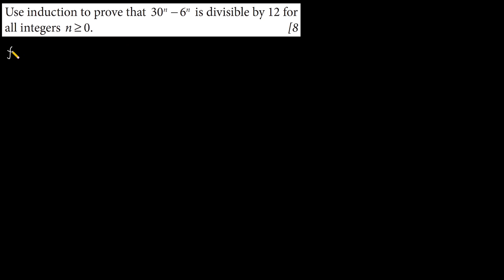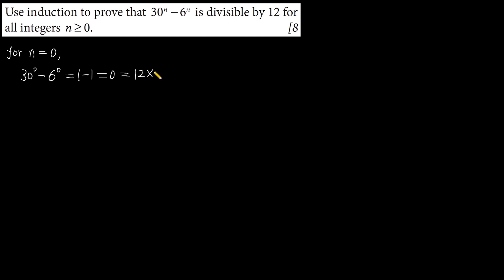For n equals 0, then 30 to the power of 0 minus 6 to the power of 0 equals 1 minus 1 equals 0, which equals 12 multiplied by 0. So it is true for n equals 0.